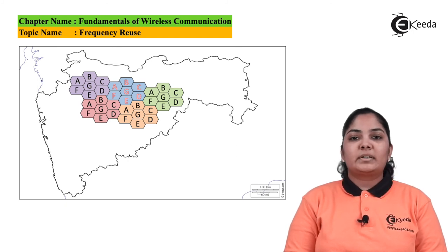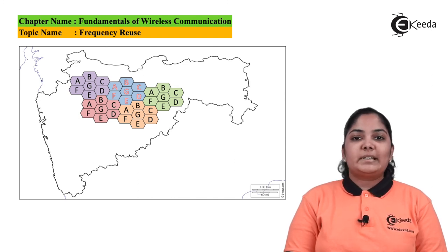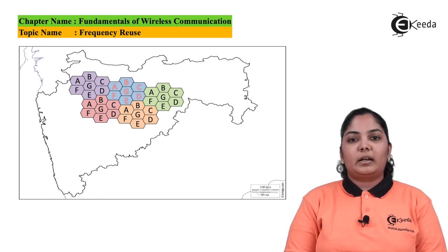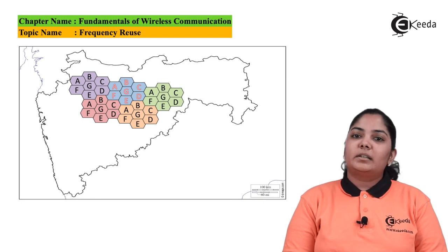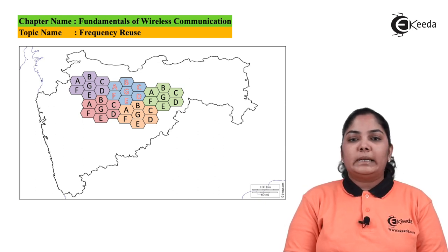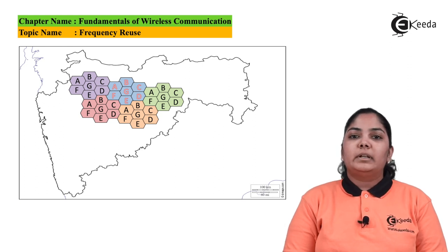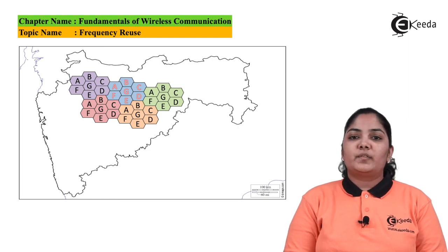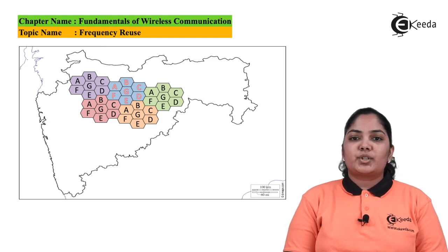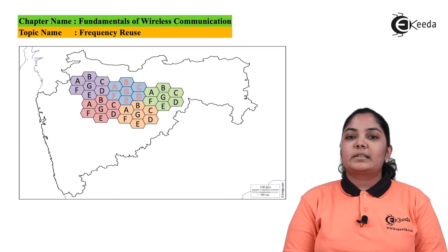In the next slide we can see a map of the state of Maharashtra showing a cellular system where multiple cells form one cluster. Seven cells form one cluster, and this cluster is repeated again and again to provide cellular coverage across different geographical locations. The number of cells in the cluster must be optimum to minimize co-channel interference while maximizing the number of channels available for every cell. Thank you for watching — stay tuned to Ikida and subscribe.